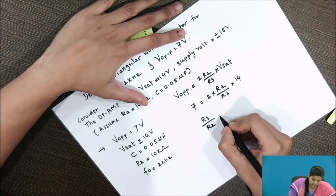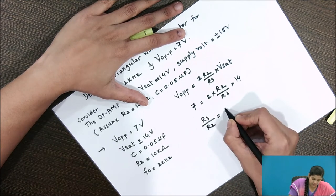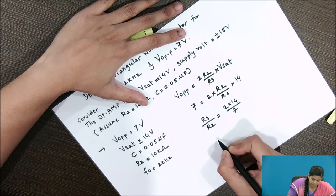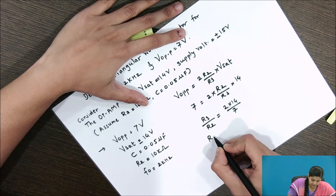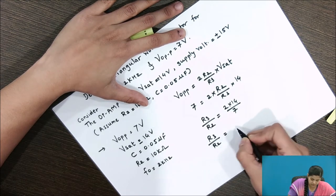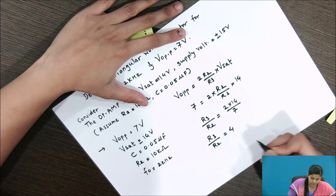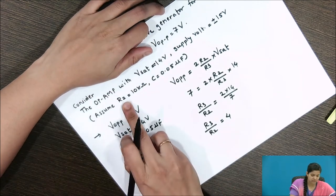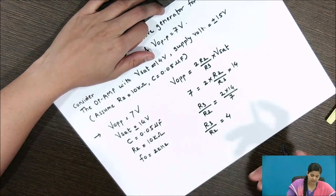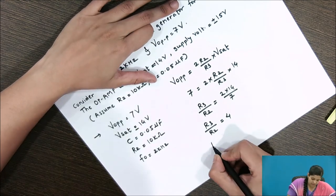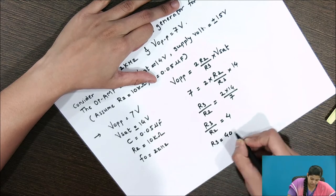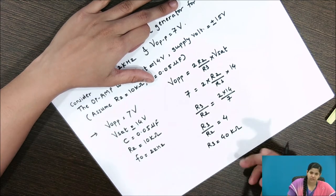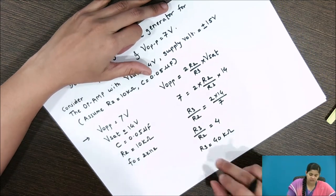By solving this equation, we get R3 divided by R2 is equal to 4. Since R2 is assumed as 10 kilohm, we can directly calculate R3 as 40 kilohm. So R3 is the first designed parameter.